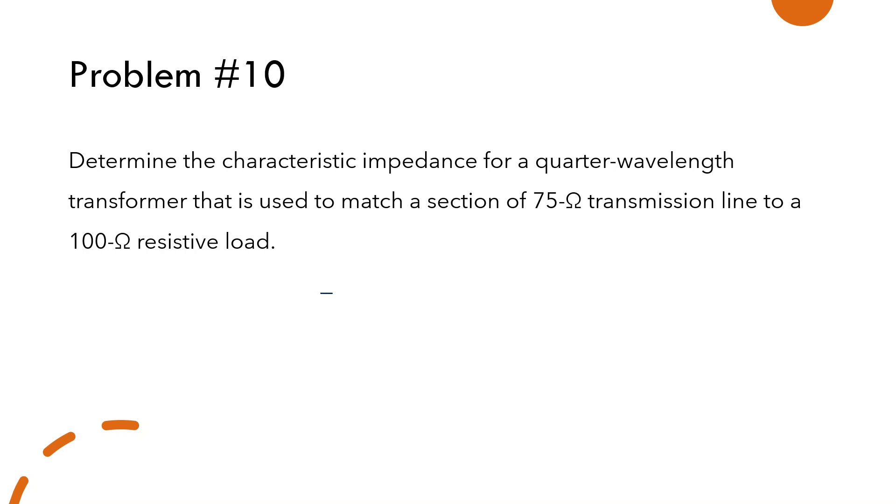So we have a transmission line and a quarter-wavelength transformer connected to a load of 100 ohms. And the characteristic impedance of the transmission line is 75 ohms.